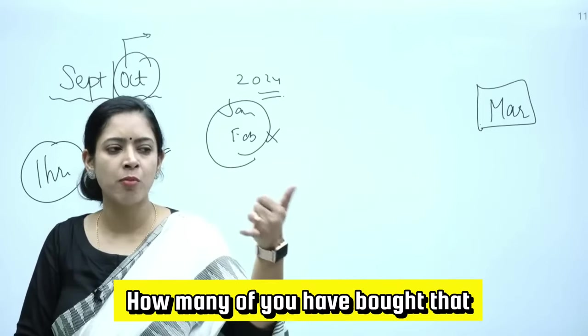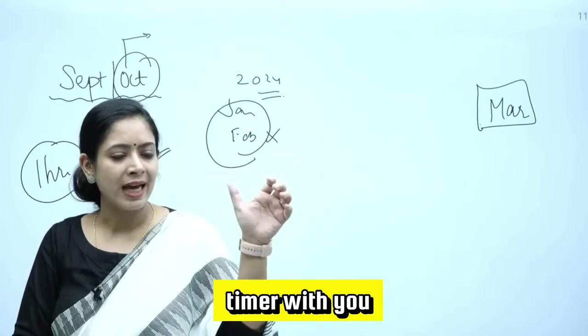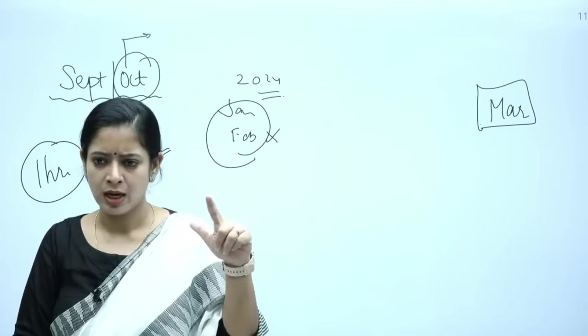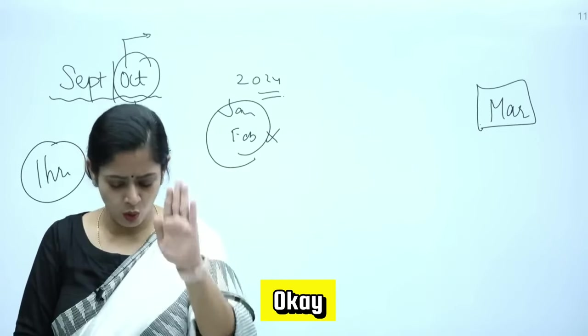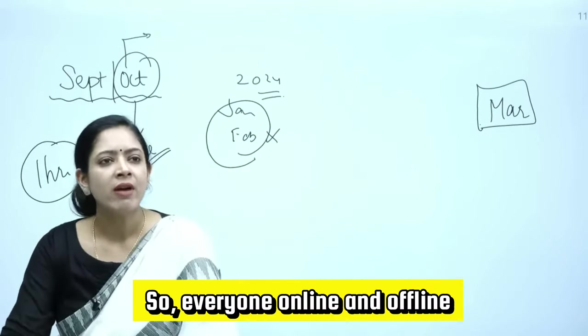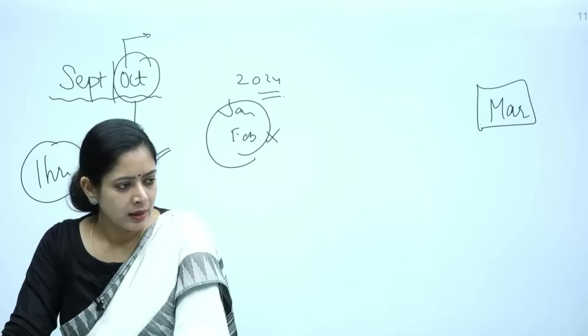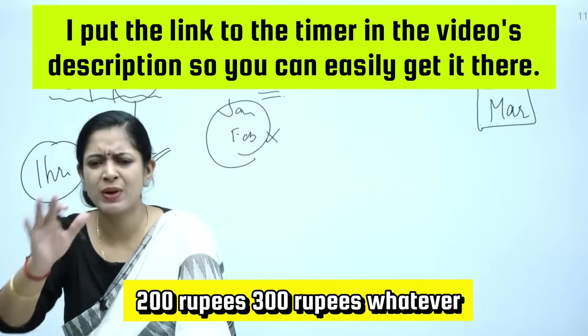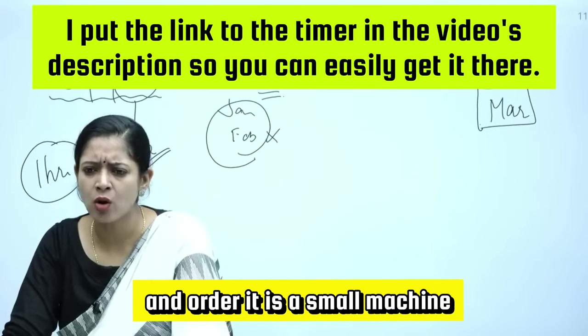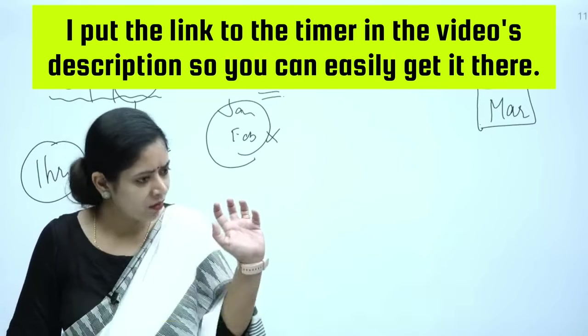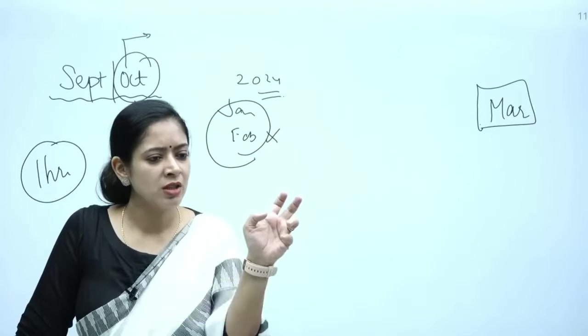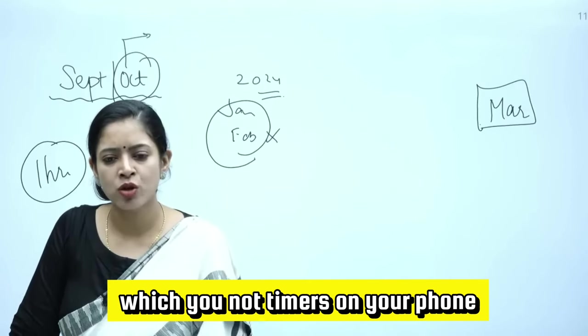How many of you have bought that timer? I have told you about the timer. Everyone online and offline, all my students will buy a small timer, 200 rupees, 300 rupees, whatever. Go on Amazon and order it. It is a small machine. I forgot to bring it today. Not timers on your phone, on your watches, no.